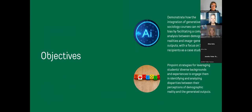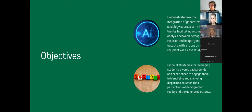For our presentation today, we have two objectives. The first one is that we want to demonstrate how the integration of generative AI and sociological forces can mitigate bias by facilitating comparative analysis between demographic realities and image-generated outputs, with a focus on SNAP recipients as a case study. SNAP stands for Supplemental Nutrition Assistance Program. Our second objective is to pinpoint strategies for leveraging students' diverse backgrounds and experiences to engage them in identifying and analyzing disparities between their perceptions of demographic reality and the generated outputs.